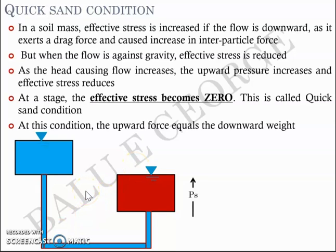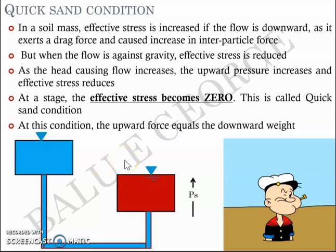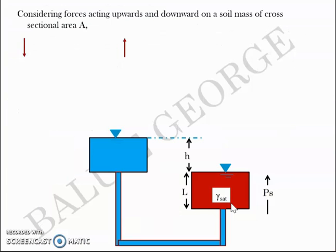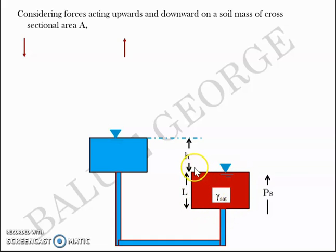If you watched Cartoon Network, you would probably remember the character Popeye, who had a few instances of being caught in a quicksand condition. Now, considering the forces acting upward and downward in a soil mass of cross-sectional area A: we have the soil mass with unit weight gamma-saturated, head causing flow marked as h, length of the sample as l, and seepage pressure acting upward.